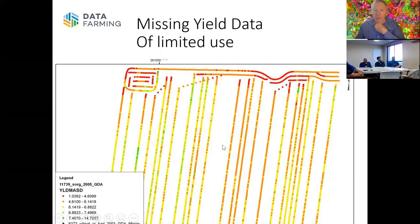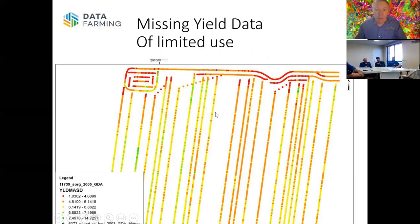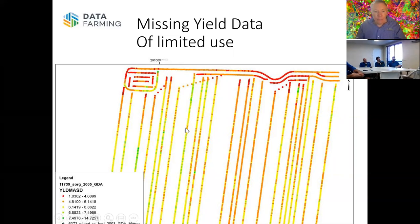Often we see situations where there are two headers in the paddock — one with monitoring and one without — and you get all these gaps in the data. It's very hard to ask the computer to interpolate across six header runs of 50 metres each; it's just not very good quality data you can rely on. Where you can, it's a good idea to skip rows so you can fill in those gaps, but bridging across 50 metres of missing data is just not going to be very useful.